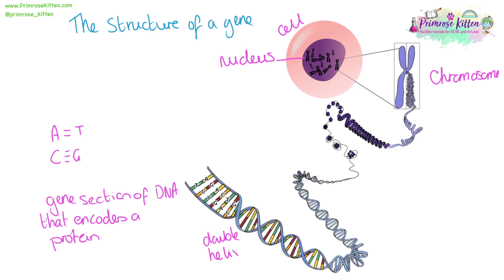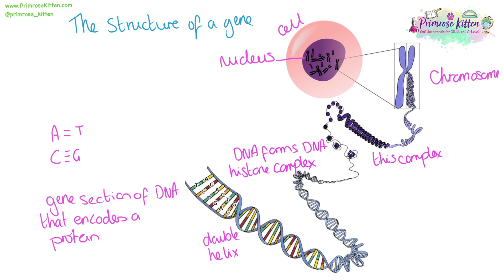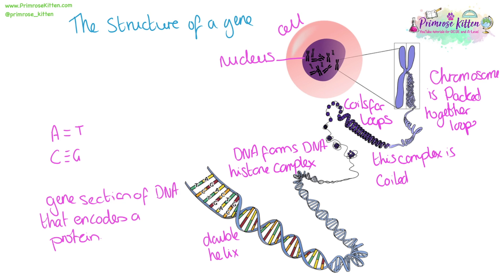This DNA is wound into a double helix. Proteins called histones are going to form a DNA-histone complex, and this complex is going to be coiled. These coils can then go on to form loops, and these coils and loops can be packed together.